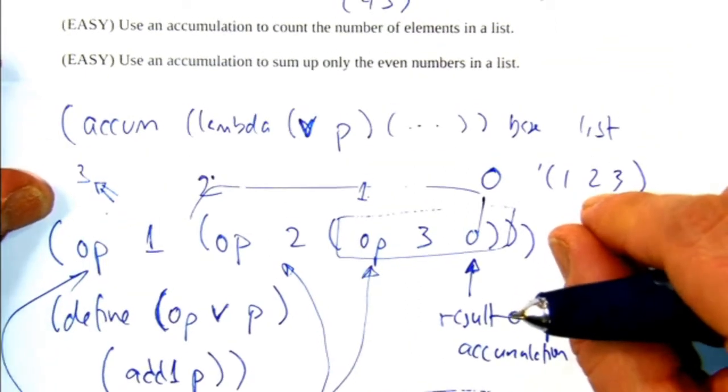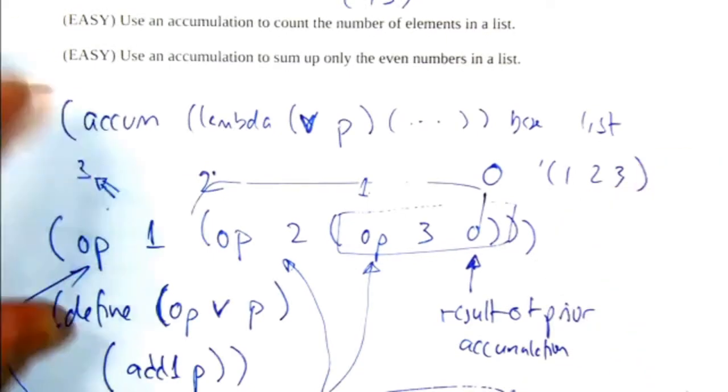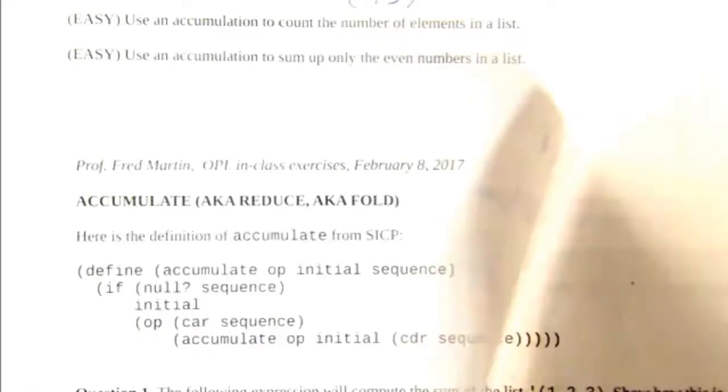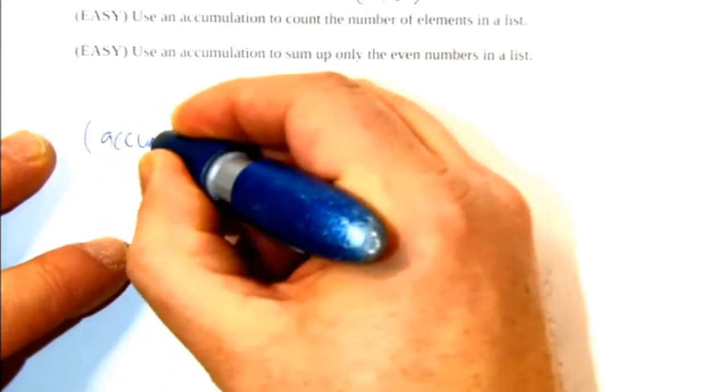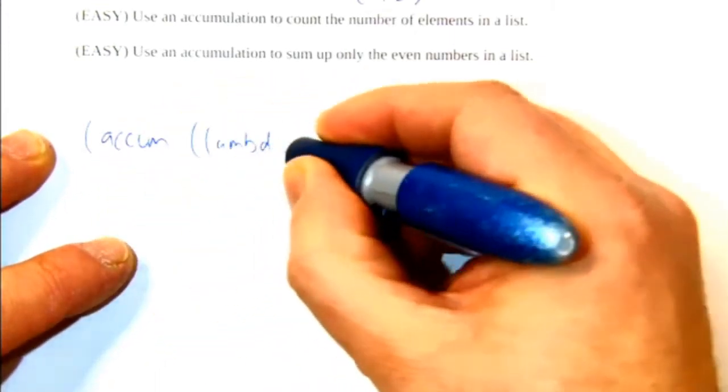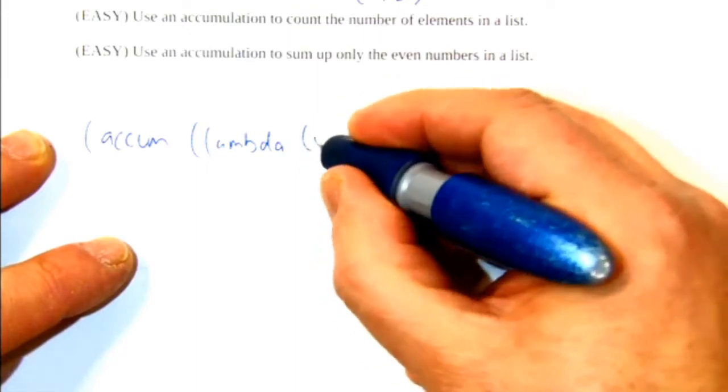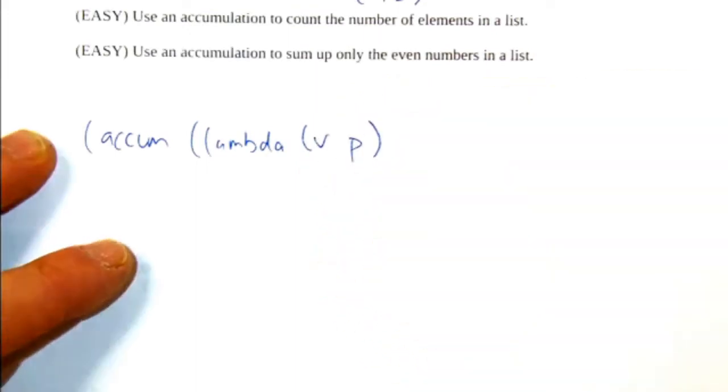All right, so pretty much we're going to go with this lambda PV thing again. So it's going to be some accumulation with lambda of V and P.